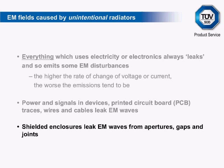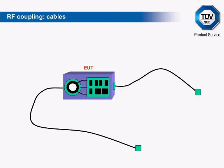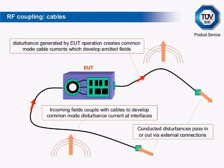Most electrical and electronic equipment is connected to the outside world via cables to carry power or signals. As long thin metal structures, these are efficient at coupling electromagnetic energy into or from the environment. The equipment's internal electrical operation creates disturbance currents at the cable ports, which are carried along the length of the cable and either develop radiated fields or pass to other equipment connected to the same cable. These currents may be unintended signals which couple out in common mode even on DC power lines or cable screens. External disturbances can also induce currents on cables that pass into the equipment via its interfaces and cause interference to its internal operation.